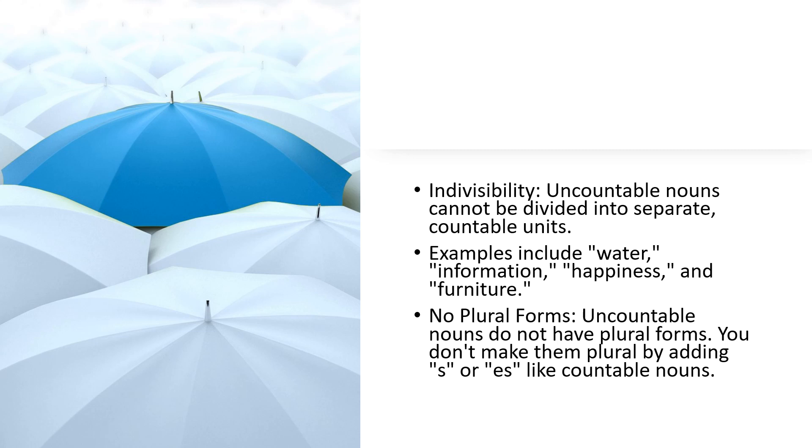Indivisibility: Uncountable nouns cannot be divided into separate countable units. For example, water, information, happiness, and furniture. There is no plural form of the uncountable nouns. They do not have plural forms. You don't make them plural by adding s or es like countable nouns.